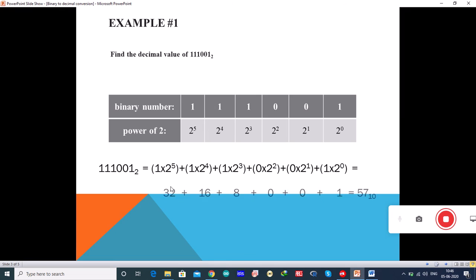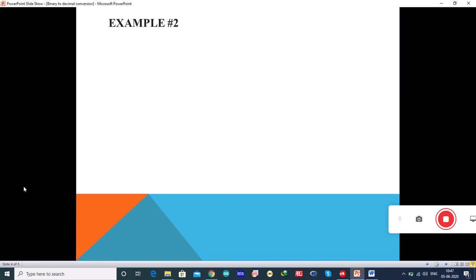If you calculate, it will be like 32 plus 2 power 4 is 16 plus 2 power 3 is 8, 32 plus 16 is 48, 48 plus 8 is 56 plus 0 plus 0 plus 0 plus 1 which is equal to 57. That is, 11001 base 2 value is 57 in decimal number system.